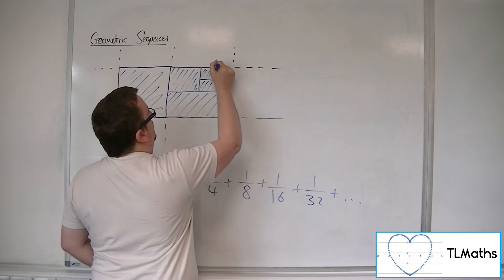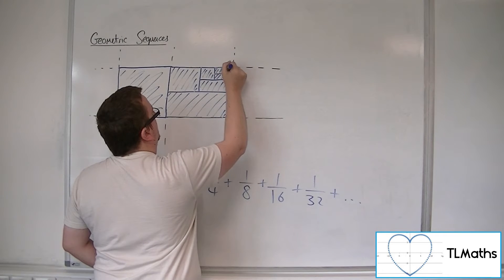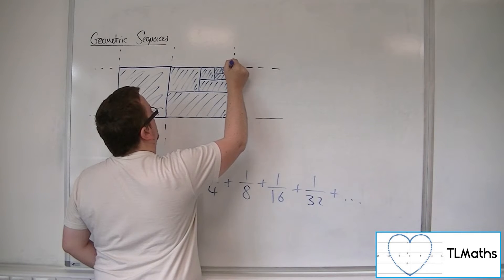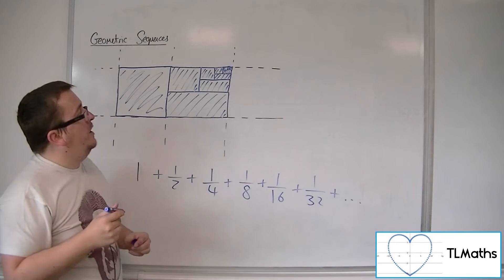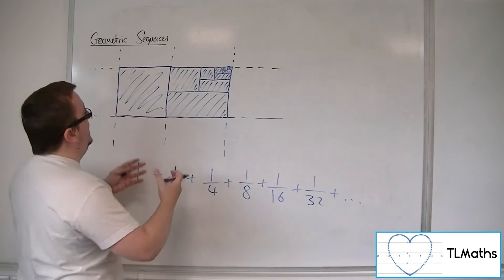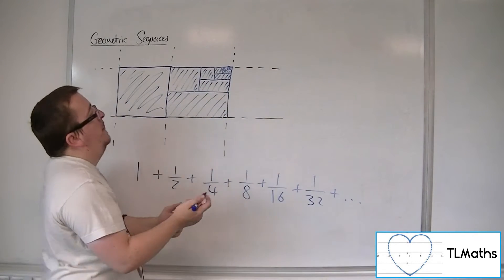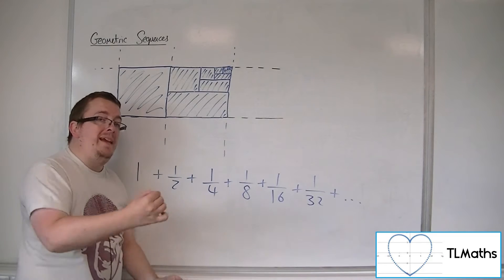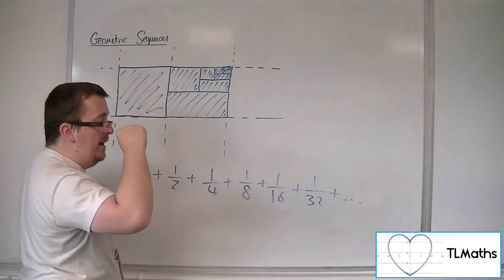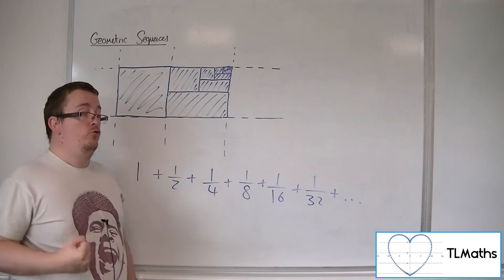If I keep on adding on a half of what's left and keep doing it, I'm going to get closer and closer and closer to 2. But because I'm adding on smaller pieces each time and just shading in half of the area that's left, I'm never actually going to reach 2.